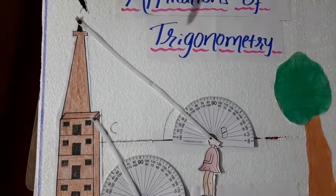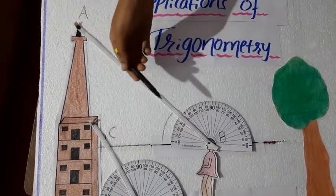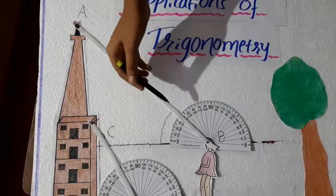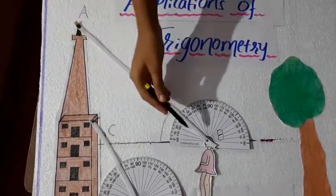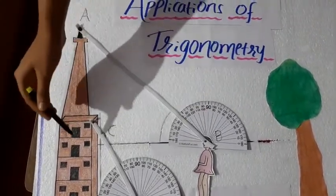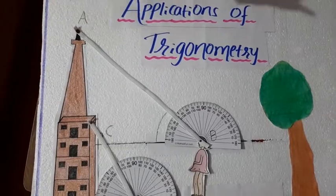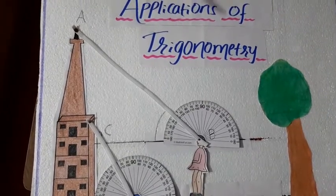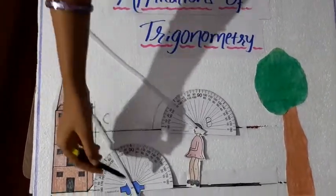In this situation also, the same formula or trick applies, that is tan. But in this case, we already know adjacent side, but we don't know opposite side. And we can also find that one. Similarly, in the case of this car also.